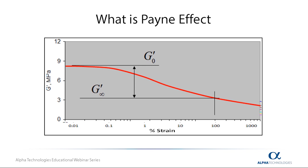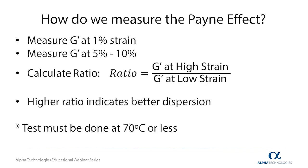This dynamic strain effect has been measured in the industry for decades, often tested on dynamic oscillatory shear rheometers such as the RPA. So how do we quantitatively measure the Payne effect? Typically, we measure our shear modulus G' at 1% strain, then we measure G' at 5% or 10%. We then calculate the ratio between our G' at high strain and G' at low strain. A higher ratio indicates a better dispersion. It is important to point out that this test must be done at 70 degrees Celsius or less.